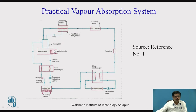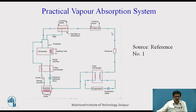So the function of this entire assembly of analyzer and rectifier is to remove the water vapor from the ammonia vapor. After removing this water vapor, the pure ammonia vapor will go to the condenser. In the condenser, as we have already seen in the simple vapor absorption system, the function of condenser remains unchanged. It will condense the high pressure ammonia vapor into the high pressure liquid. So at the outlet of condenser, we will get the high pressure ammonia liquid, because ammonia is the refrigerant, which is stored into the receiver.